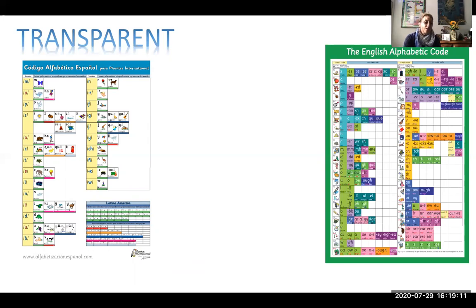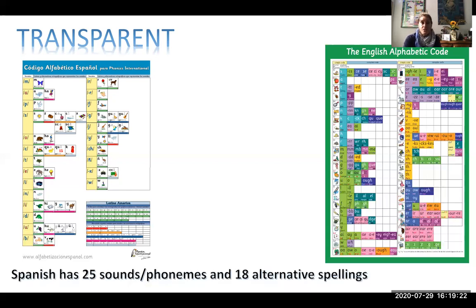They are really simple to deduce as well as being easy to teach. Spanish has 25 sounds, phonemes, and 18 alternative spellings.